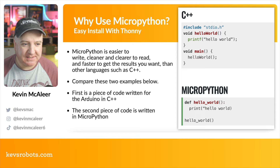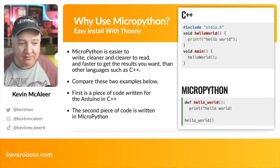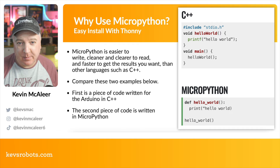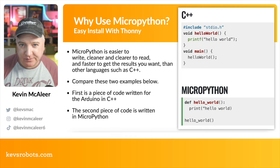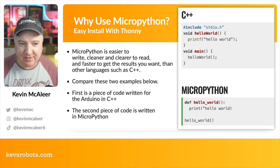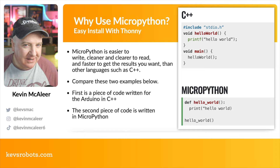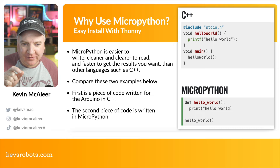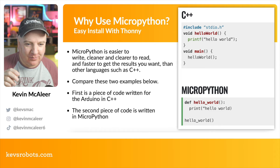Why use MicroPython instead of C or C++? MicroPython has been designed to be easier to write, cleaner and clearer to read, and faster to get results — not that the code runs faster, but it's easier to write and run code to get the results you're after. C is actually faster by an order of magnitude, but for most robotics use cases you won't notice the difference — MicroPython is more than good enough. Comparing the two: C++ Hello World has a lot of esoteric syntax — hash include, stdio.h, void, printf, semicolons, multiple brackets.